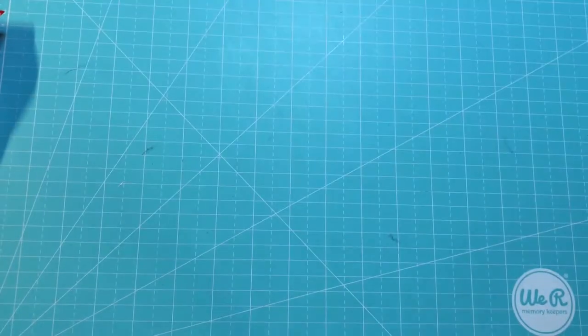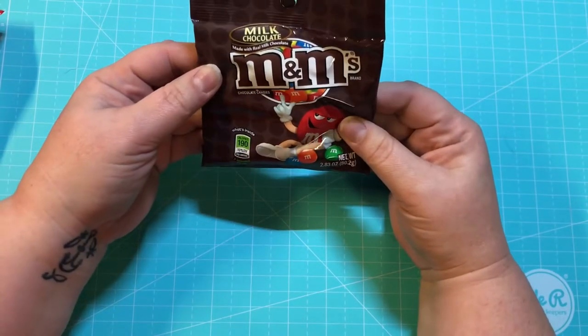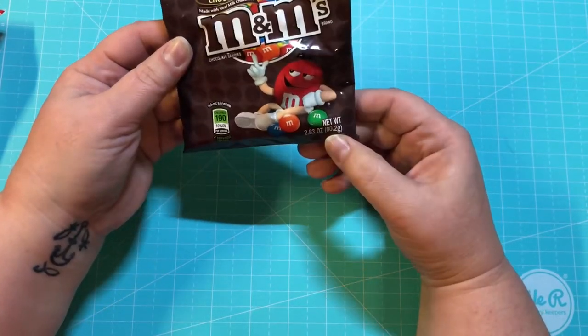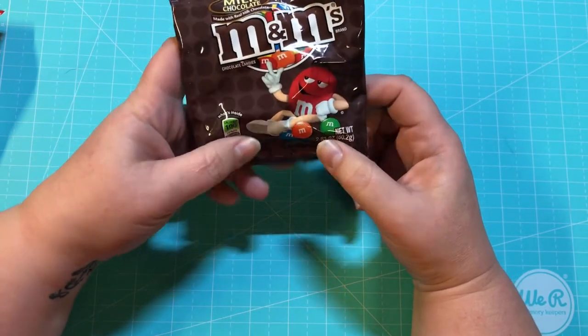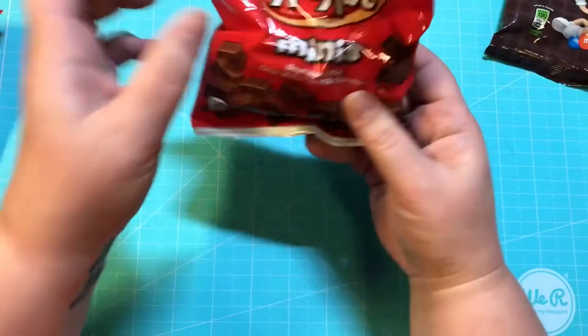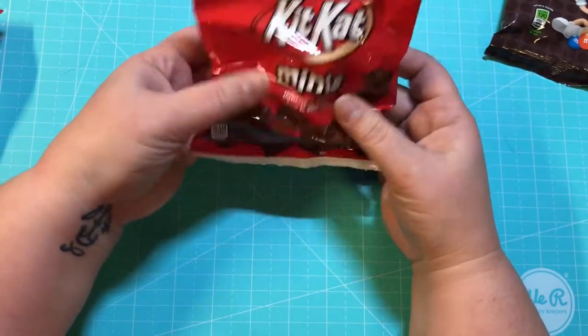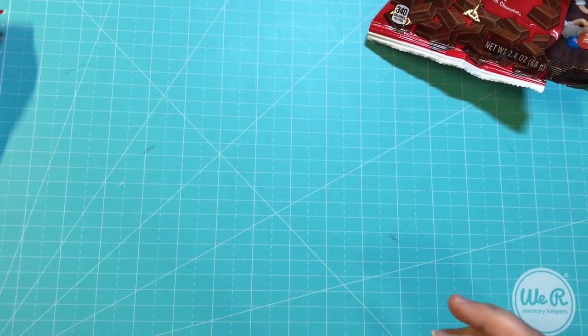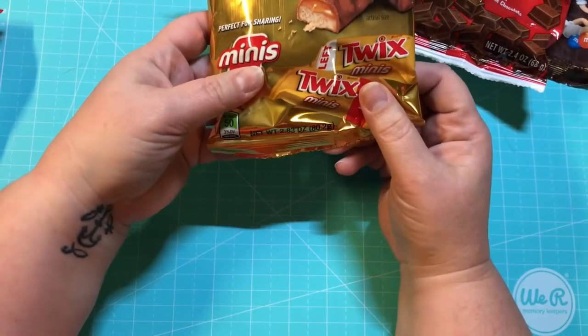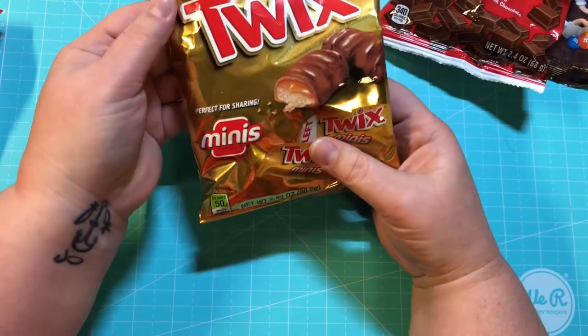Of course you need that, and then I picked up a few candies. So this 2.83-ounce bag of M&Ms, a 2.4-ounce bag of KitKat minis. I tried to get candy that I knew that everybody would like. This is a 2.83 bag of the Twix.